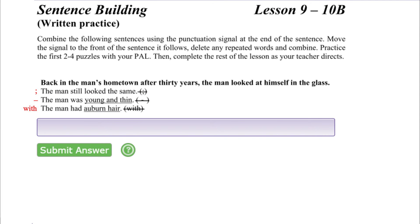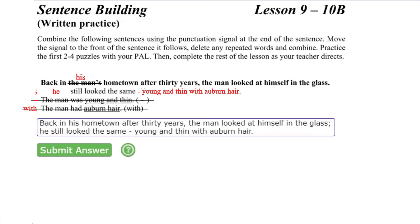Next, insert the underlined adjective phrases from the second and third signal sentences into the first signal sentence. Finally, delete any repeated words and replace them with the pronoun if necessary. In this puzzle, delete 'the man's' from the base sentence and replace it with the pronoun 'his.' You also need to delete 'the man' from the first signal sentence and replace it with the pronoun 'he.'